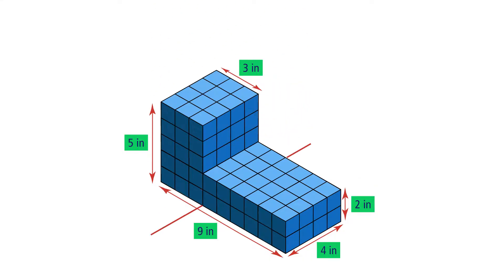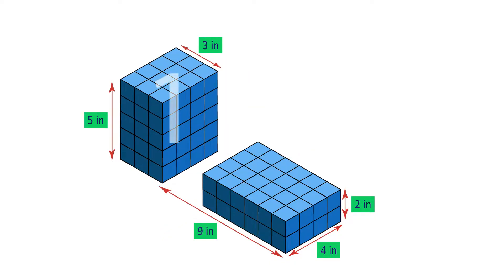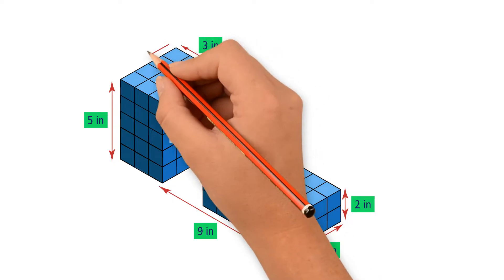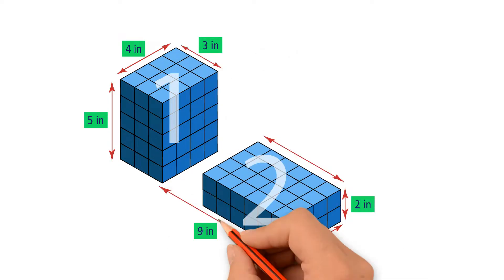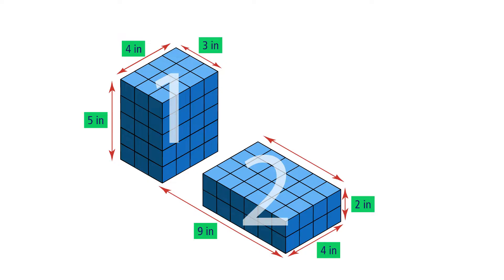Let's cut this figure vertically to create two rectangular prisms. To find their volumes, we first need to find the length, the width, and the height of each prism. We already know the height and the length of prism 1, so now we need to find the width. Notice that the width is the same as the original figure, so the width of prism 1 is 4 inches. For prism 2, we know the height and the width, but not the length. To find it, we subtract the length of prism 1 from the length of the original figure: 9 inches minus 3 inches gives us 6 inches.